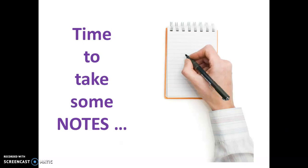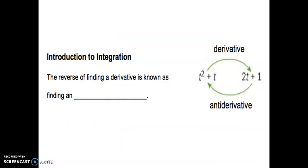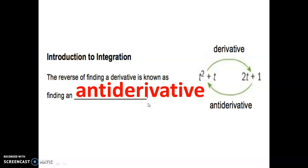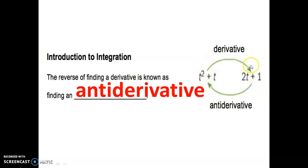Let's take some notes. You've been provided with a notes page about integration. Introduction to integration: the reverse of finding a derivative is known as finding an antiderivative. Antiderivative is the reverse operation. So for example, we have this function. To take the derivative by power rule, that 2 would drop down and we have 2t. If somebody gave you 2t and said find the antiderivative, that process would take you back to the original function. So derivative takes you this way, antiderivative takes you back. Antiderivatives are the opposite of differentiation, or opposite of finding derivatives.